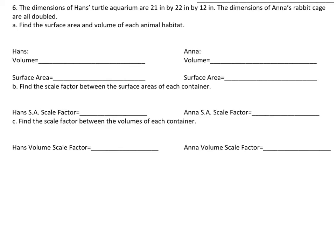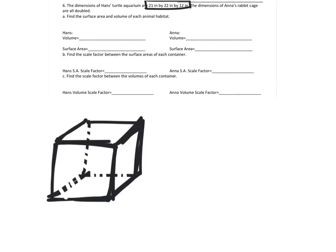If we look at Hans, let's look at those labels right now: twenty-one by twenty-two by twelve. Let's go ahead and draw his. This is Hans' rabbit cage. We'll just put in those values - twenty-one by twenty-two, these are inches by the way, by twelve inch.